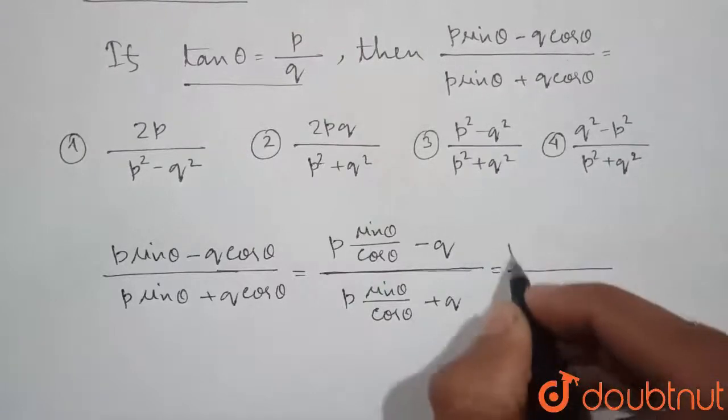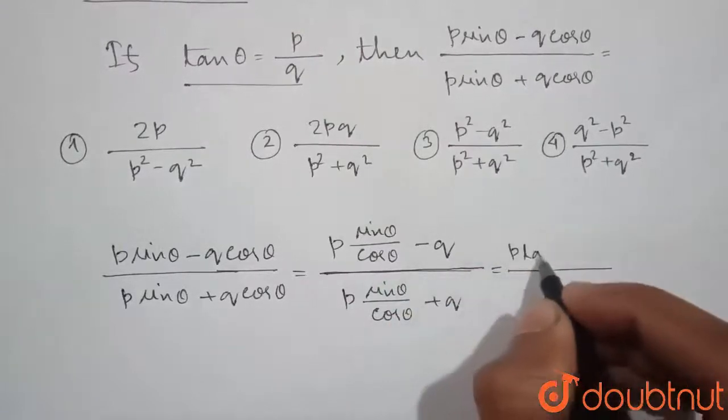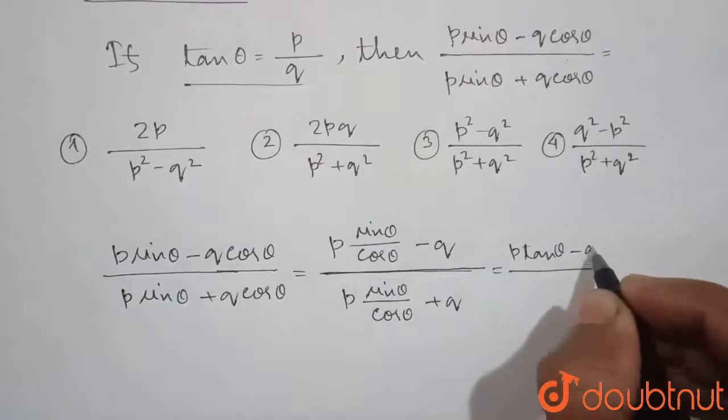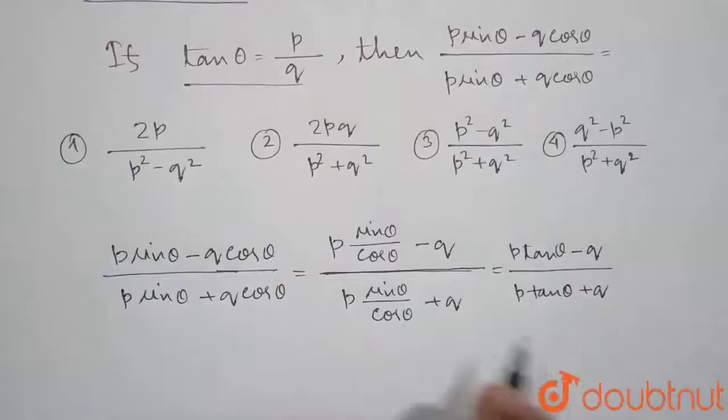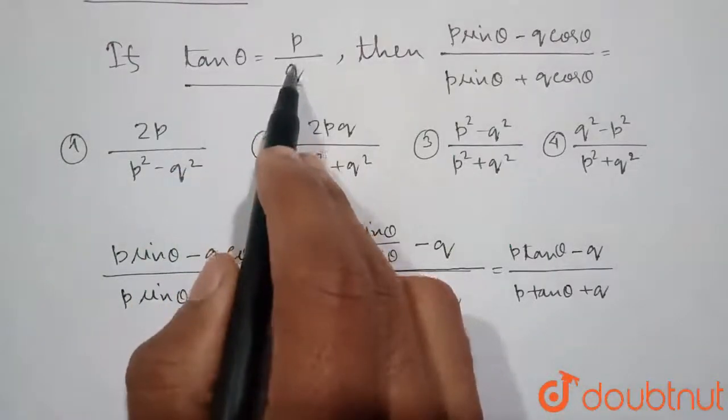So, we can write it as p sin theta divided by cos theta is tan theta. So, minus q, p tan theta plus q. And we know that tan theta is given as p by q.